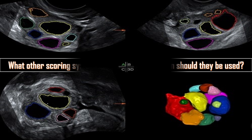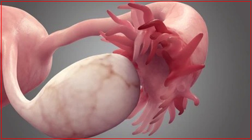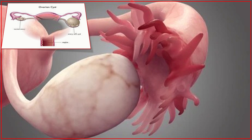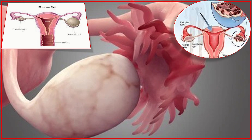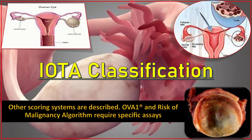Other scoring systems are described; however, over-one risk of malignancy algorithms require specific assays, making routine use impractical. The IOTA (International Ovarian Tumour Analysis) classification, based on specific ultrasound expertise, has comparable sensitivity and specificity to RMI and forms an alternative for those experienced in this technique.